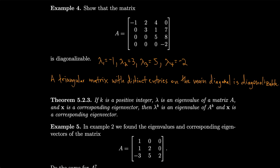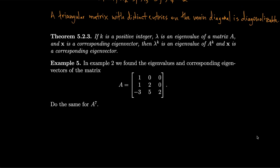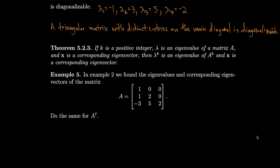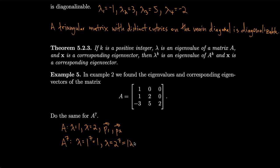If k is a positive integer, lambda is an eigenvalue of a matrix A, and x is a corresponding eigenvector, then lambda to the k is an eigenvalue of A to the k, and x is a corresponding eigenvector. In example 2, we found eigenvalues lambda equals 1 and lambda equals 2, with corresponding eigenvectors P1 and P2. So for A to the seventh, the eigenvalues are 1 to the seventh, which is 1, and 2 to the seventh, which is 128. The eigenvectors are still P1 and P2.